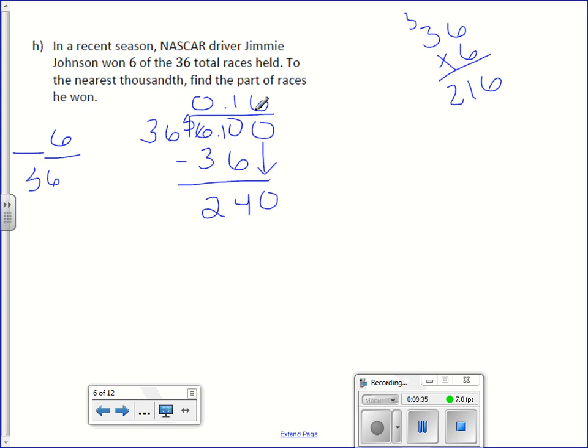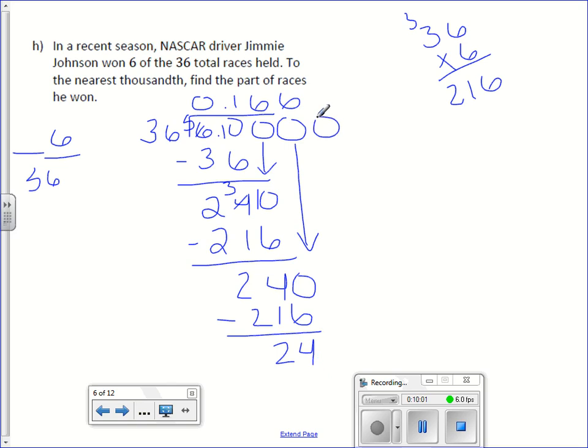Which looks about right. Minus 216. 10 minus 6 is 4. 3 minus 1 is 2. Bring down a 0. Looks like we have a little bit of repeating going on. But since I need to round to the nearest thousandth digit, I need to go one more than that to help me round. So it would be 0.167.